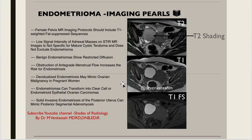Endometriomas can transform into clear cell or endometrioid epithelial ovarian carcinomas, though this is a very rare transformation. Solid invasive endometriosis of the posterior uterus can mimic posterior segmental adenomyosis, so we should be careful in delineating whether the endometriotic implant is within the uterus or posterior to the uterus.